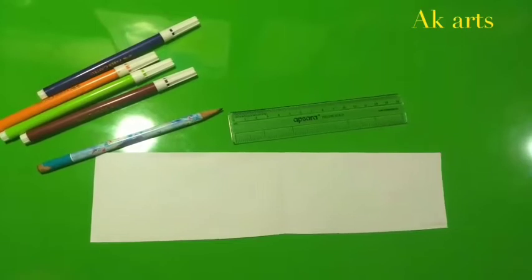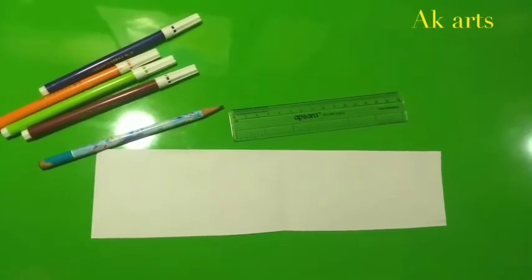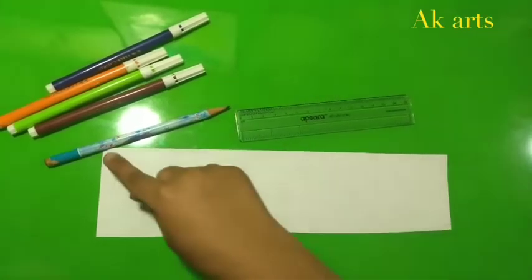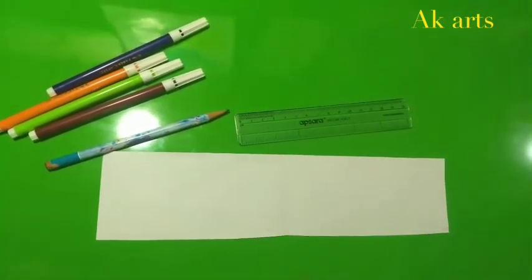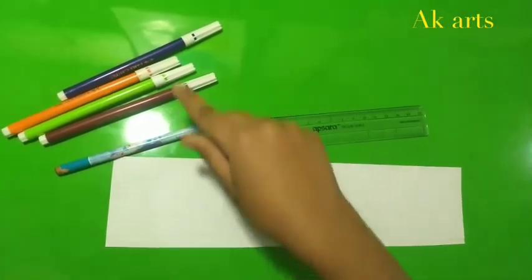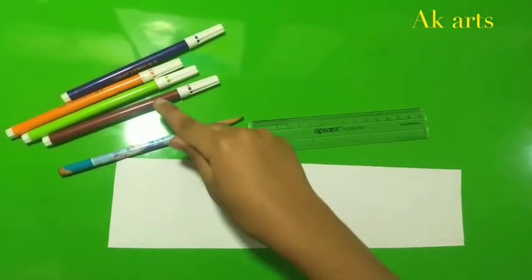Making Expansion Ladder. Materials Required: 30 cm long, 8 cm width paper, scale to measure, pencil, 4 color sketch pens.